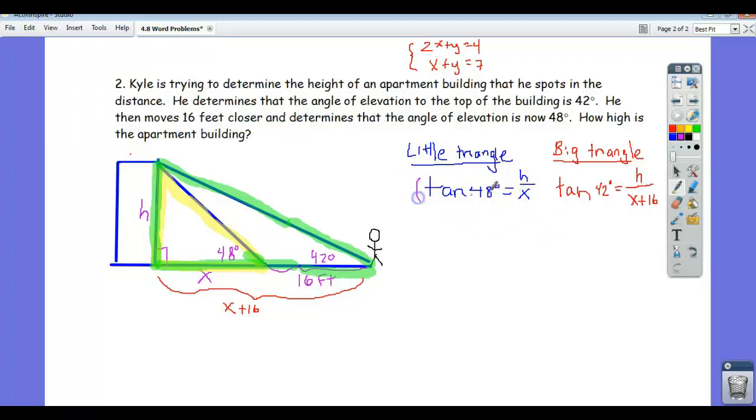So, if I multiply both sides of this equation by x, then I just get x times tangent of 48 degrees equals h. And if I multiply this equation here, both sides by x plus 16, if I multiply both sides by x plus 16, then the left-hand side becomes, and again careful, I'm going to put this in parentheses because I'm multiplying the whole side by x plus 16. These x plus 16s divide, and I just get an h.